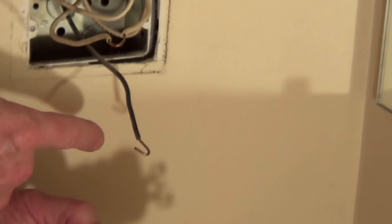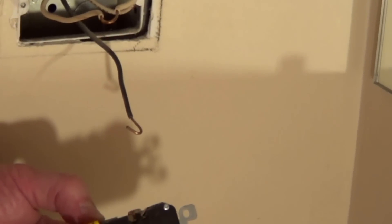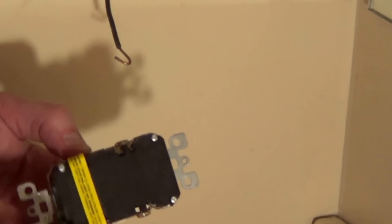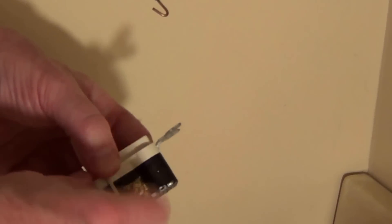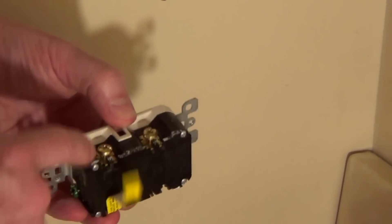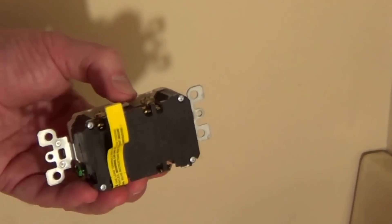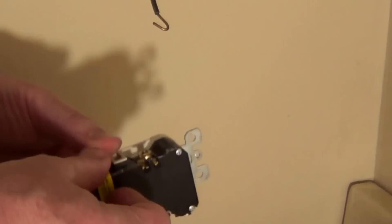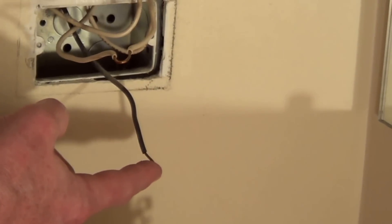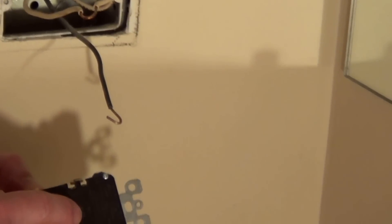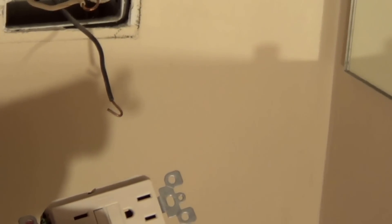If there was a second hot wire, in this case a black wire going on to another circuit, then we would be using the load side. We would remove this tape and we would connect those wires going down to another circuit. But because we only have one hot coming in, we know that this is the end and we're only going to be using the line side of the GFI.